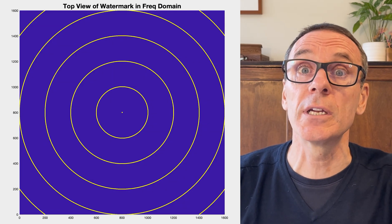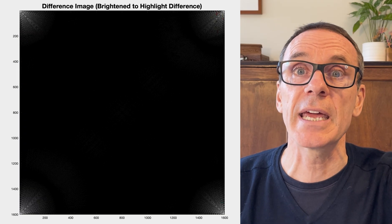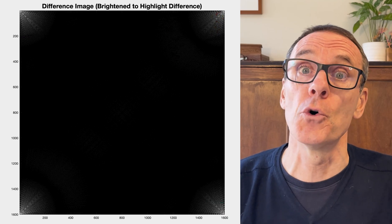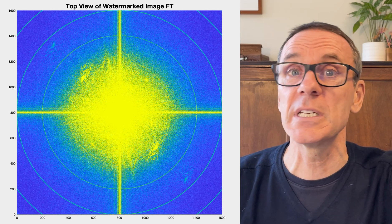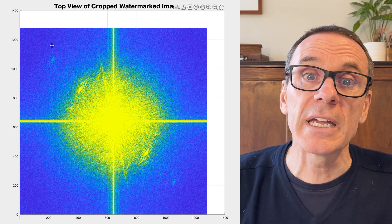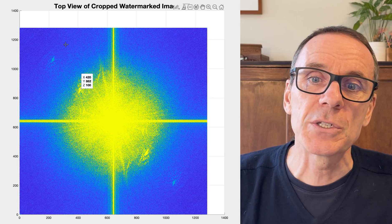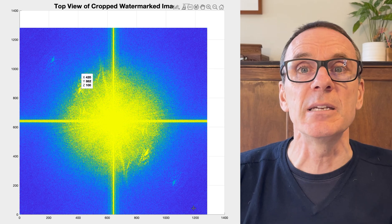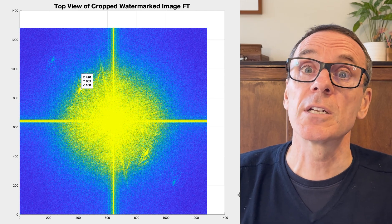Let's try a circular watermark. Here it is on the image in the frequency domain. Going to the image domain, we can't see the effect of the watermark — excellent. The differences are still out near the corners though, so changing to a circular watermark doesn't actually help. It survives the forward and backward transform, but when we crop it, the watermark again doesn't survive. If you look very carefully, you can just make out some arcs in the frequency domain corresponding to the watermark — it hasn't completely been removed, but it's not showing up clearly enough. So we need a different approach.